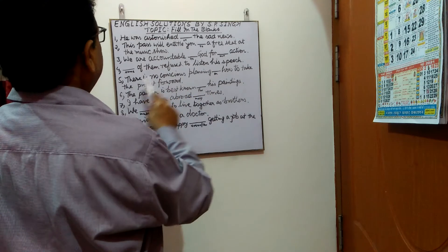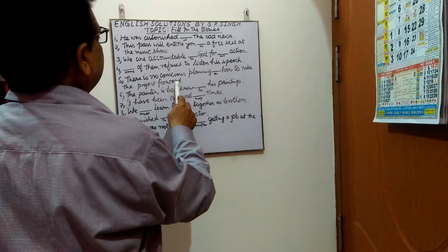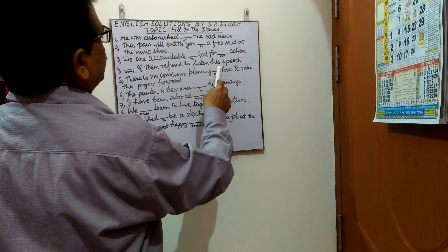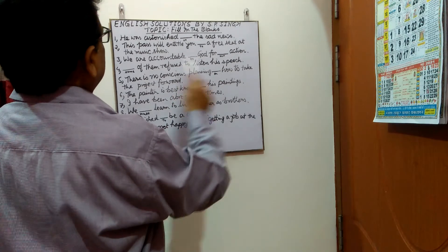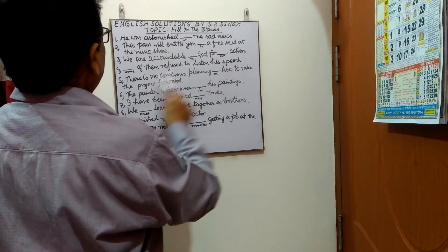Next sentence: 'There is no conscious planning ___ how to take the project forward.' In the blank you have to put 'on'. The sentence will be: There is no conscious planning on how to take the project forward.